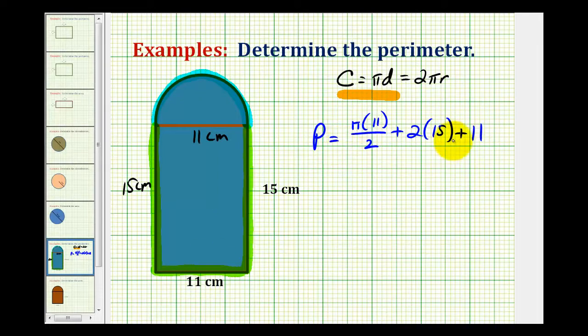And again, notice how I'm leaving the units off until the very end. Now let's go ahead and determine the exact value of this, and then we'll get a decimal approximation. So two times 15 would be 30. Thirty plus 11 would be 41. So the perimeter would be 41 plus 11 halves pi, or 11 pi over 2, and this is all in centimeters.